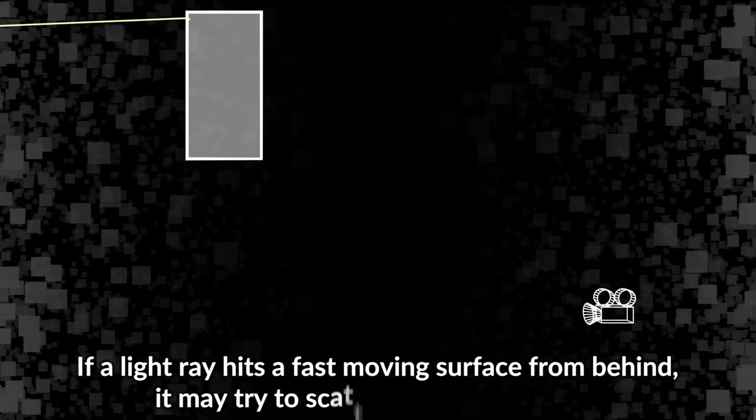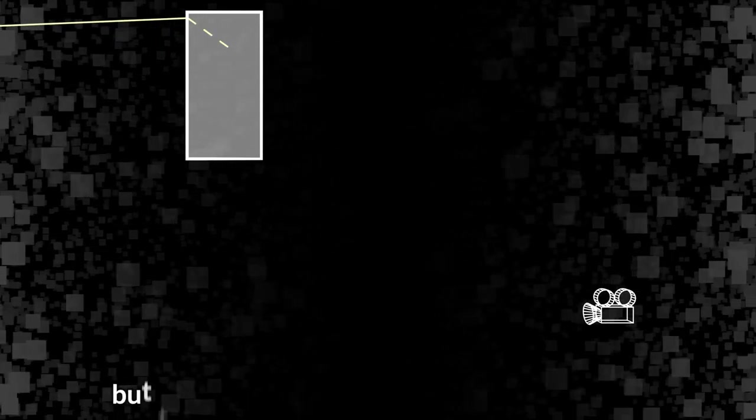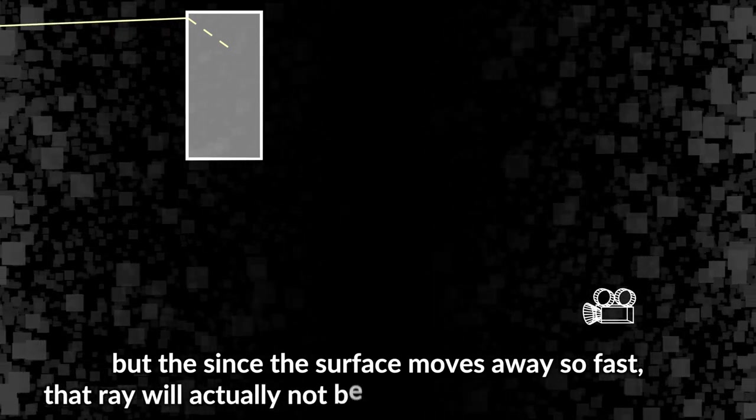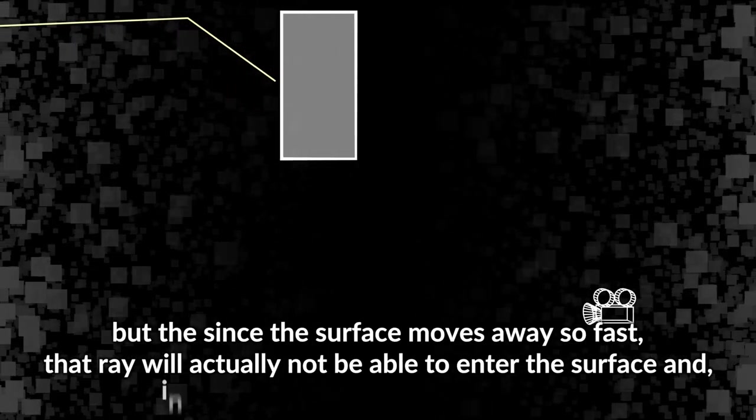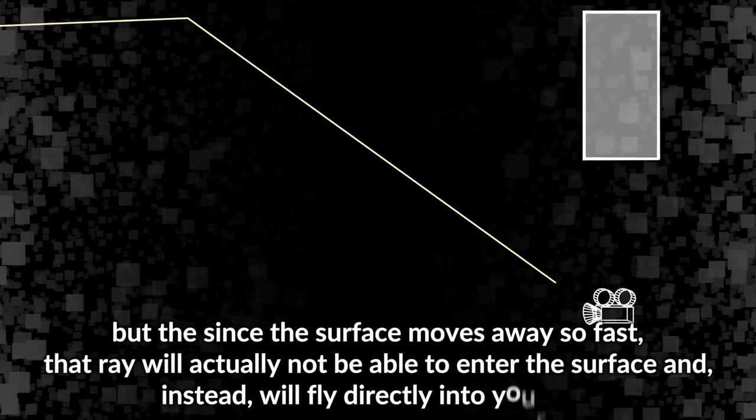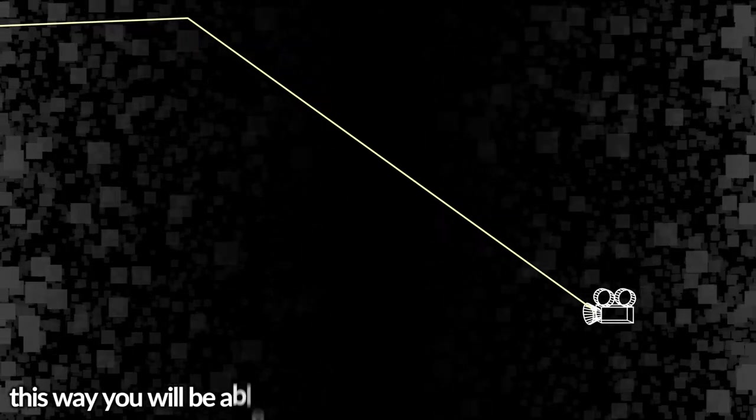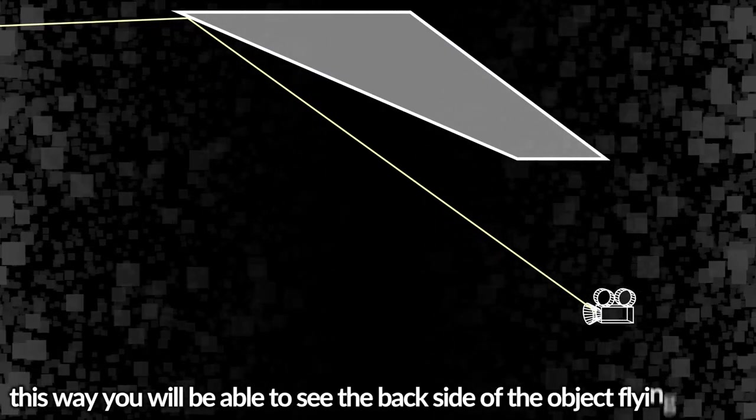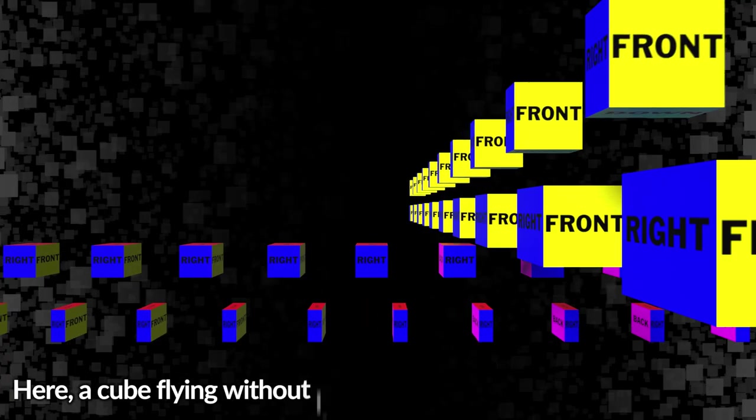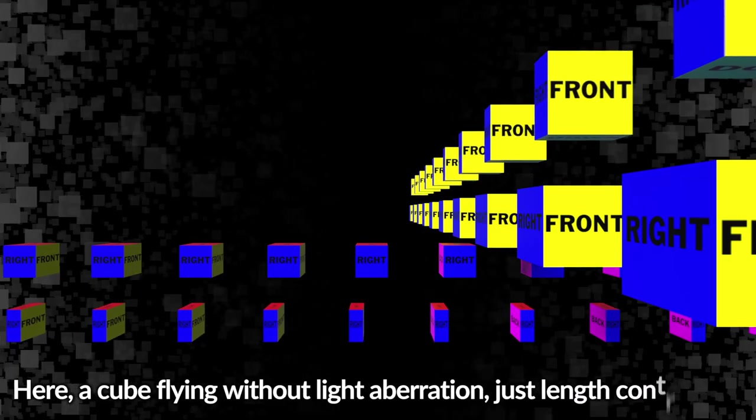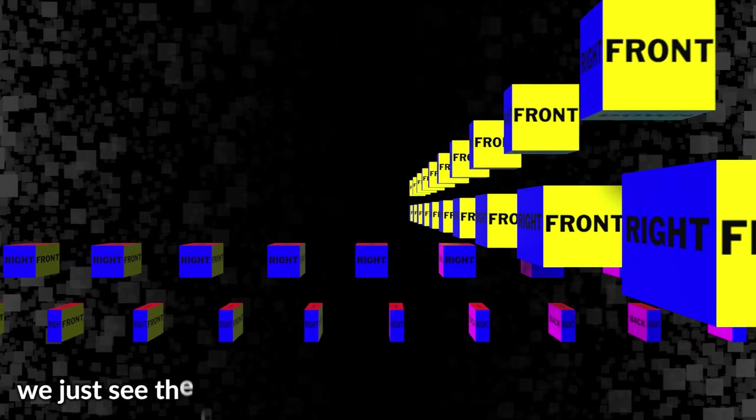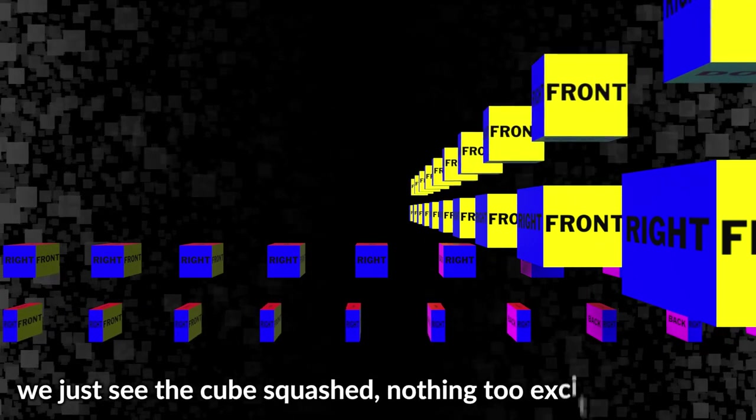If a light ray hits a fast-moving surface from behind, it may try to scatter inside the surface, but since the surface moves away so fast that ray will actually not be able to enter the surface and instead will fly directly into your eye. This way you will be able to see the back side of the object flying at you. Here a cube flying without light aberration - just length contraction. We just see the cube squashed, nothing too exciting anymore.